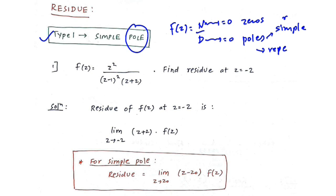In the simple pole, the value of n is equal to 1, but in the repeated pole, the value of n is greater than 1. Let us understand this by an example. Example 1: f of z is equal to z-squared upon (z minus 1) whole squared into (z plus 2). Find the residue at the point z equals minus 2.